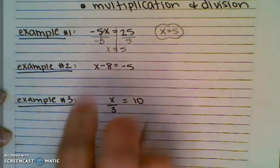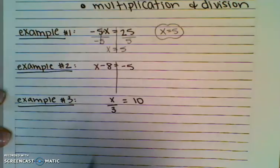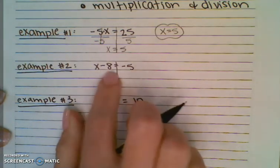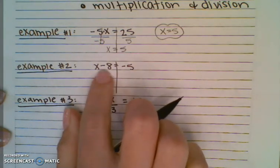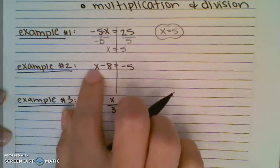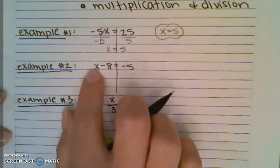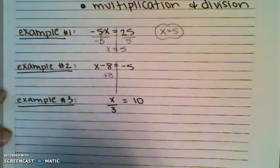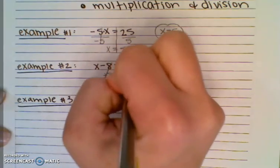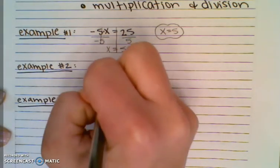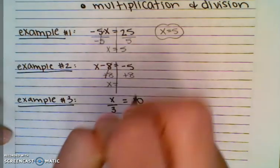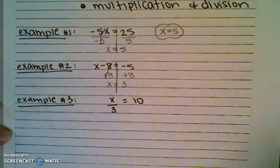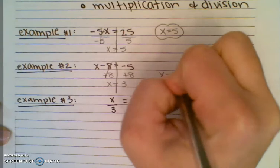The next one — draw your line down the middle. It's x minus 8. The opposite of minus 8 is add 8, because the whole point of this is to get the variable by itself. In this case it's x, but it could be any letter. So I'm going to add 8 to the left, and those cancel. I have to also add 8 to the right. So x is going to equal 3.